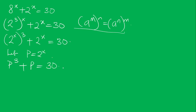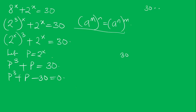We need to find the factors of 30 such that P to the power 3 plus P minus 30 equals 0. The factors of 30 are 2 times 3 times 5.